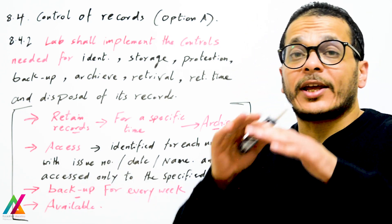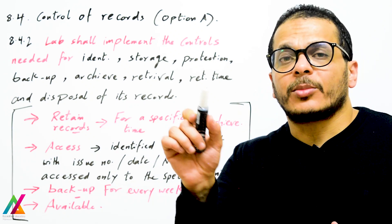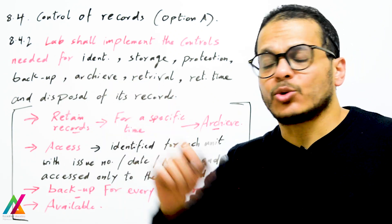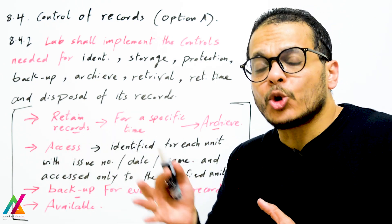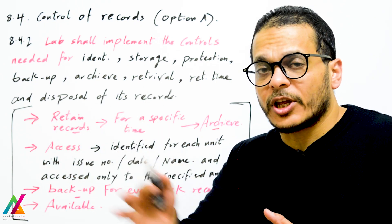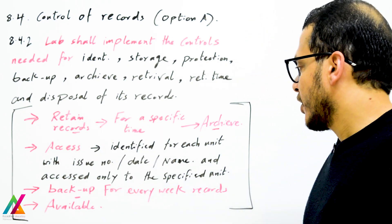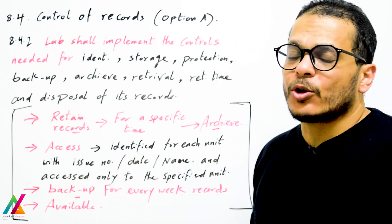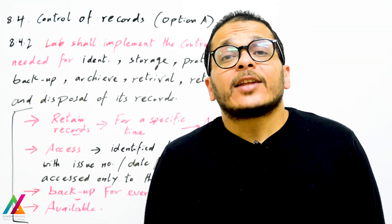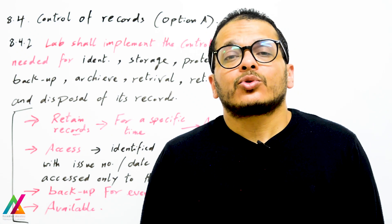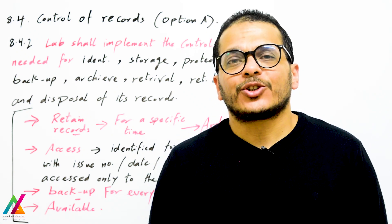To protect records against loss, the lab shall have backups. You can perform backup every week, using a specific form to record that backup was completed and signing it. A dedicated portable hard drive for each unit can be used to store all their results for backup. All records shall be available at all times. That was the end of our lecture for today — thank you and see you in the next lecture.